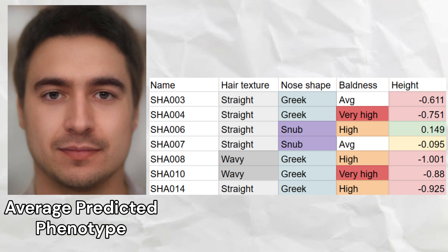Five out of seven samples had a Greek nose shape, and two samples had a snub nose shape. Five out of seven samples were predicted to have high odds of male pattern hair loss, and two samples had average odds of balding. Five out of seven samples were predicted to be shorter than average in height, and one sample was predicted to be slightly taller than average.